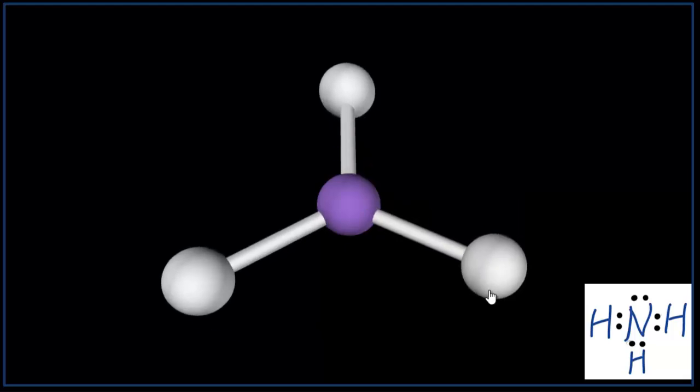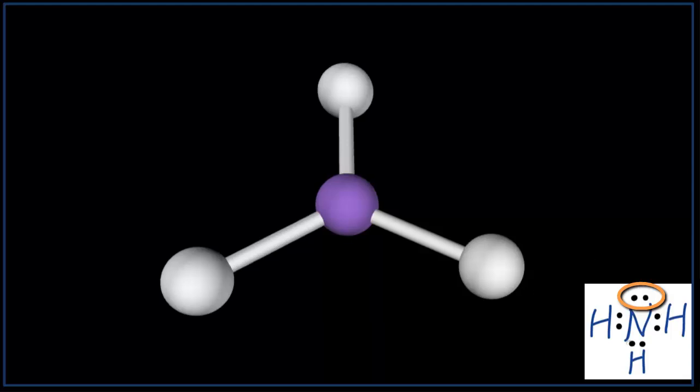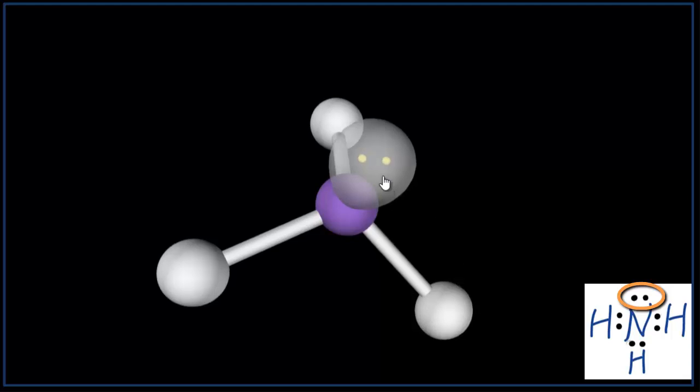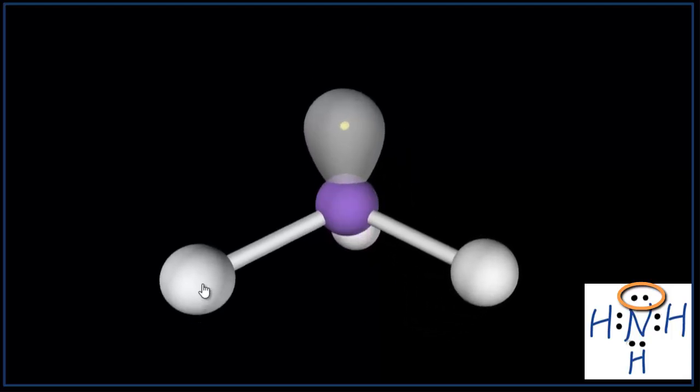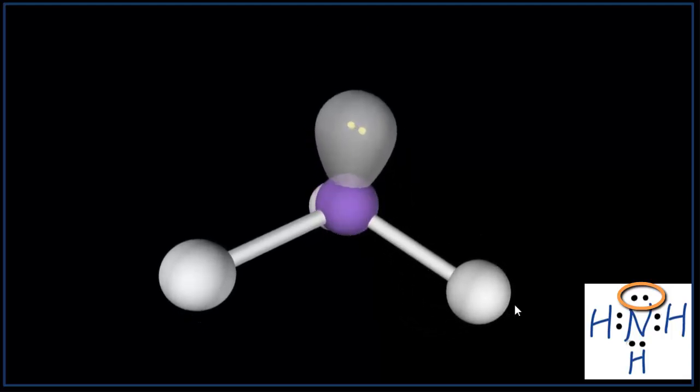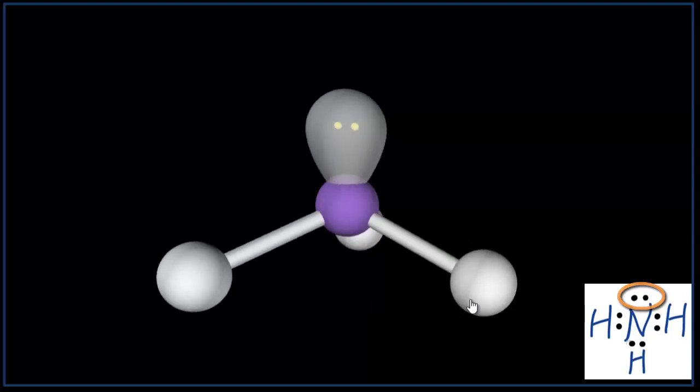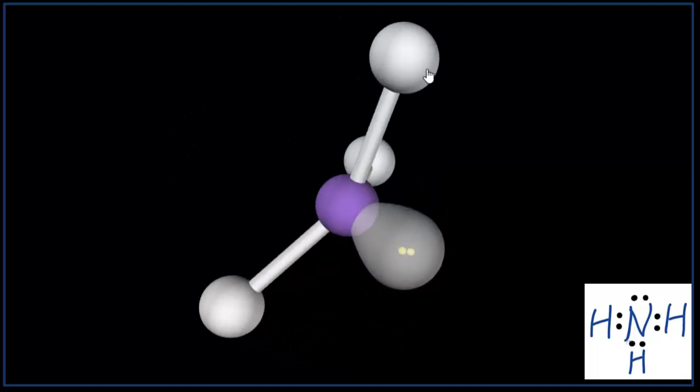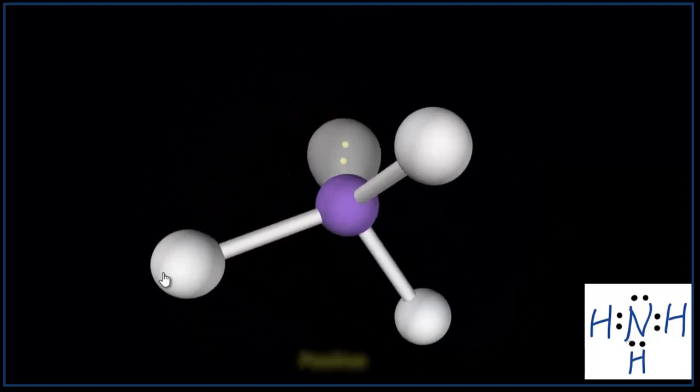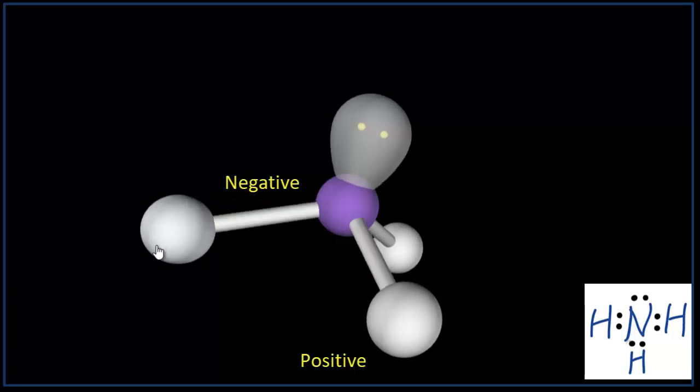But we need to go back to our Lewis structure, because we have a lone pair of electrons we have to consider. When we add the lone pair, it influences the shape. It actually pushes down the hydrogens, and now we have a pyramidal, also called pyramidal structure. So the structure is no longer symmetrical, and that means we're going to have a positive and a negative side, and we're going to have a polar molecule.